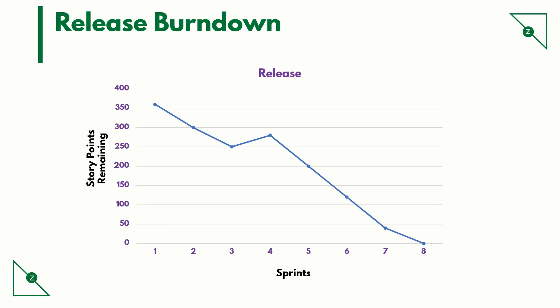Release Burndown. Progress on a release can be tracked by means of a release burndown chart. On the y-axis, we can see the story points committed to the upcoming release. On the x-axis, we have the total number of sprints for this particular release — in this case, there are 8 sprints. As stories get closed as part of individual sprints, the work gets burned down.